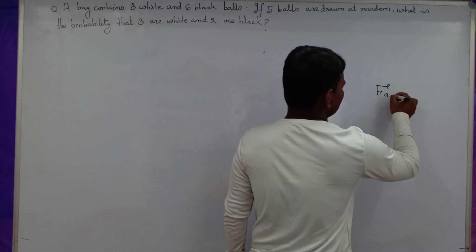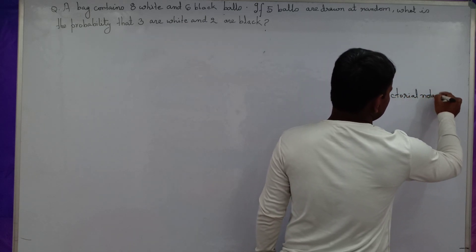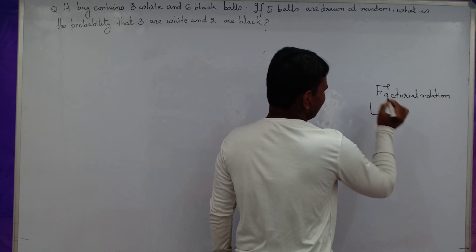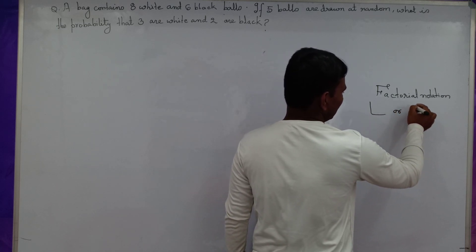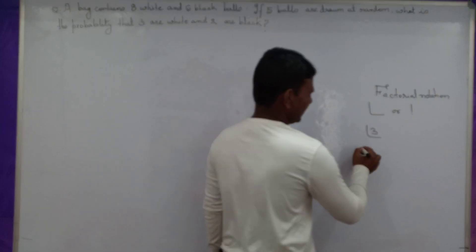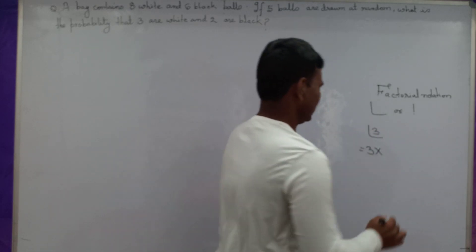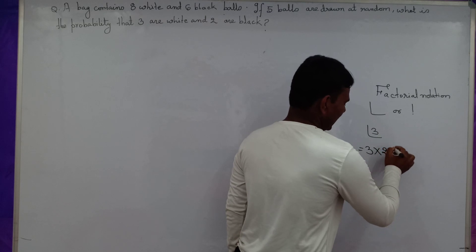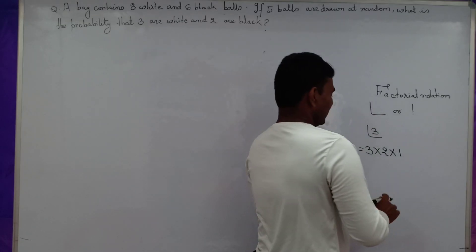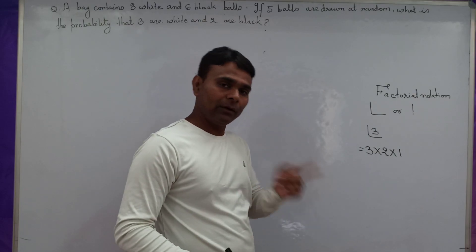Factorial notation — it is denoted by this symbol. What is the value of factorial 3? Very simple. Take the number and subtract 1: 3 minus 1 equals 2, then subtract again — 2 minus 1 equals 1. You have to continue the subtraction until it becomes 1.